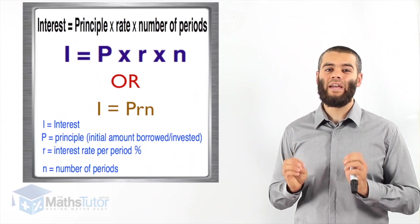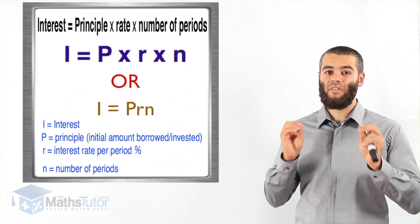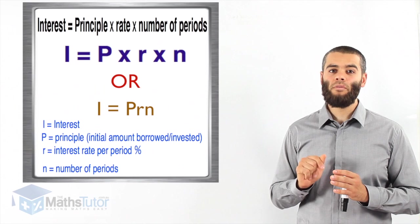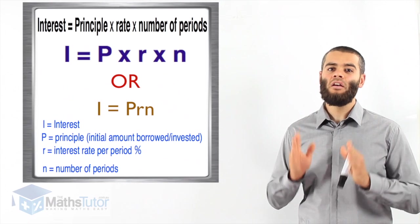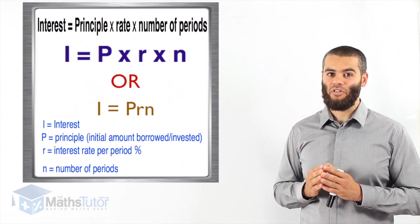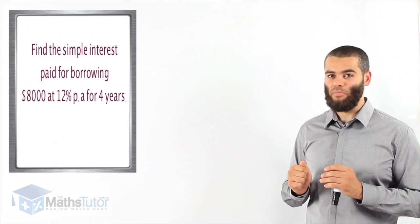So, whenever you're asked to work out the simple interest, or the flat rate interest, straight away remember, I equals PRN. That's the formula you're going to be using to find I. I stands for interest. So, let's look at an example.